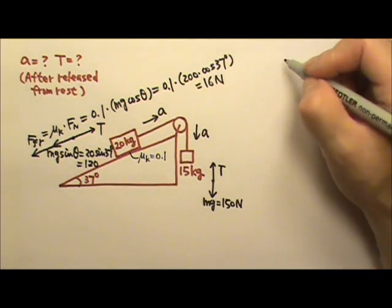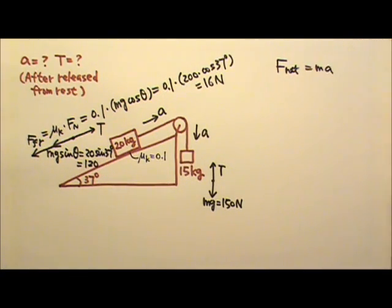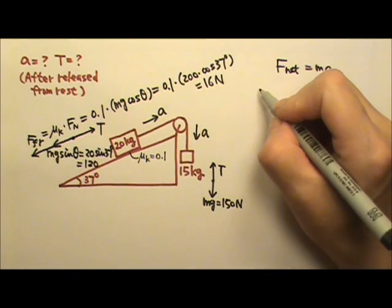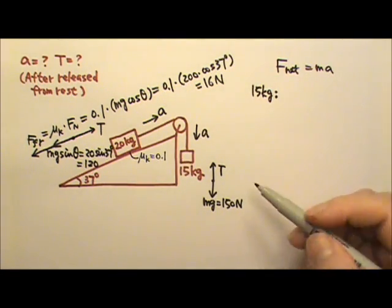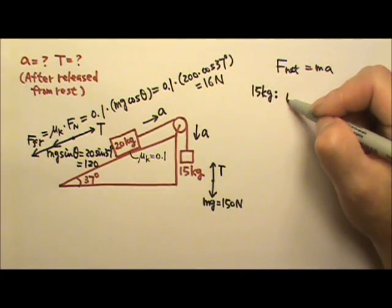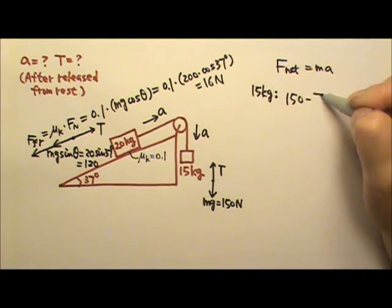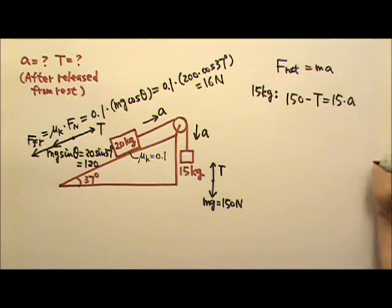Now let's write the force equation for the 15 kg box. Acceleration goes down, the downward force is bigger, so it's 150 minus T equals M15 times A.